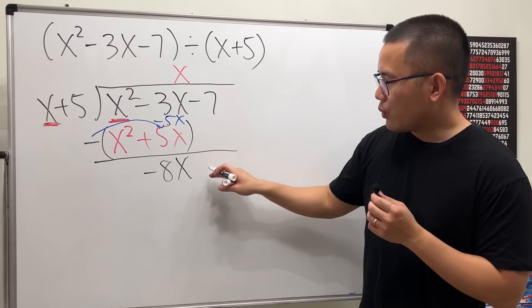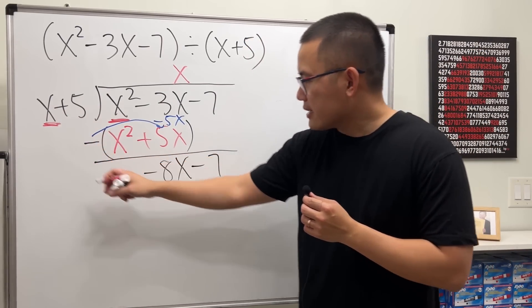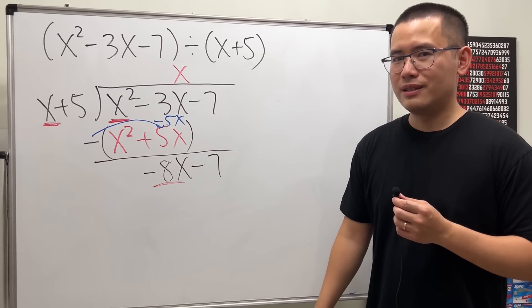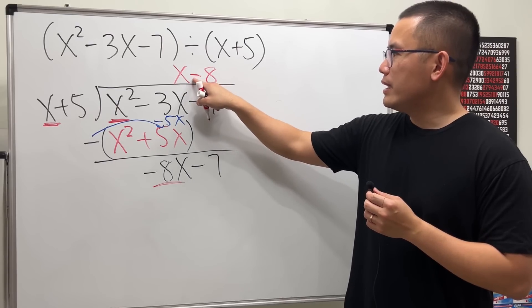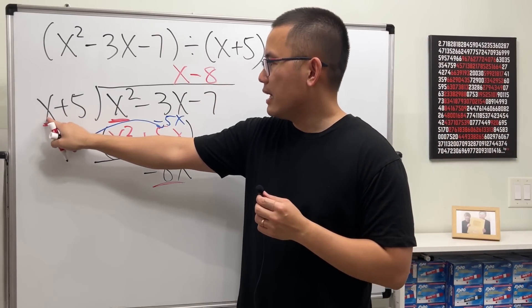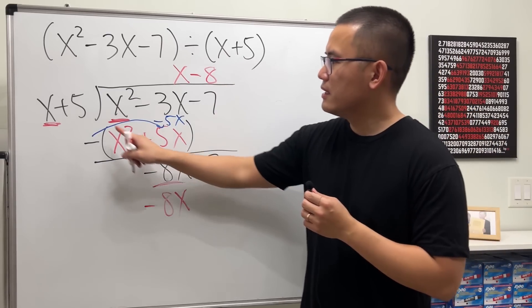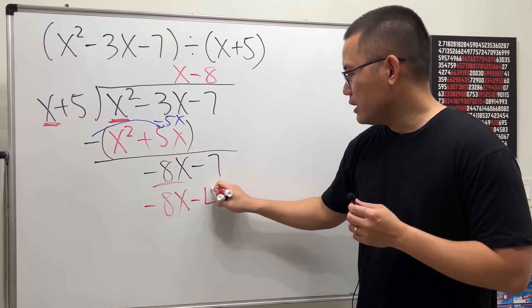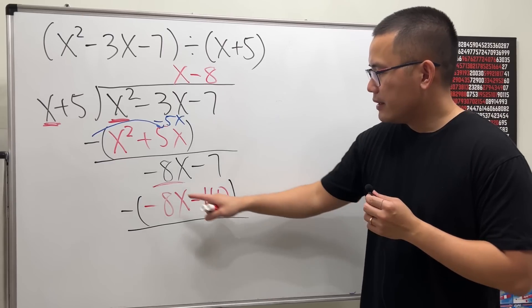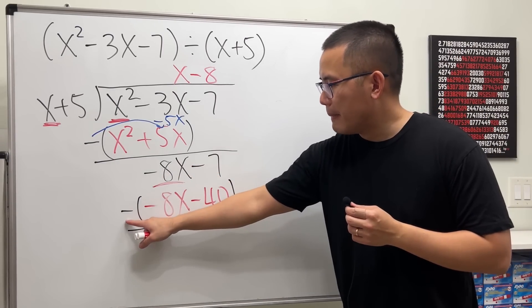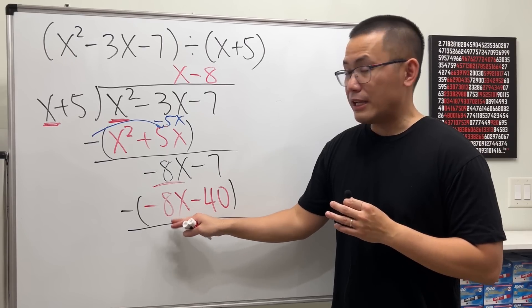And then we bring down whatever we have right here. And then we look at x and negative 8x. So what do we need? We need the negative 8. So let's write down minus 8. And we take minus 8 times x, which is negative 8x. And we take negative 8 times 5, which is minus 40. And then we subtract. Now, negative 8x minus negative 8x, they cancel out. You can see that this and that, they match exactly, so it's out.